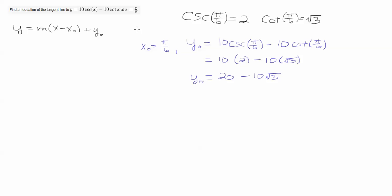And y naught, I just plug pi over 6 into the original curve, so I can find out the point on the curve. And when we do that and use our information up here, we get that y naught is 20 minus 10 root 3.